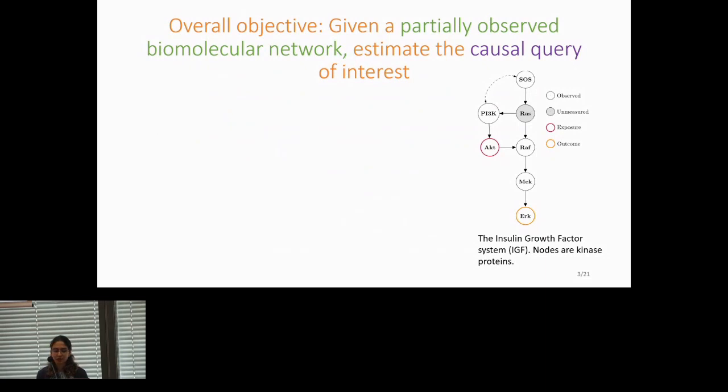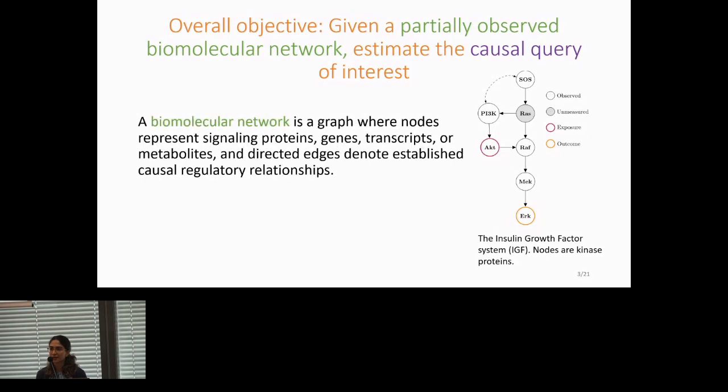What do we mean by a biomolecular network? As we have introduced it several times today, it's a graph where nodes represent signaling proteins, genes, transcripts, or metabolites, and directed edges denote established causal regulatory relationships. The insulin growth factor network to the right is an example of a biomolecular network where nodes are kinase proteins.